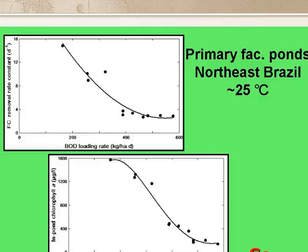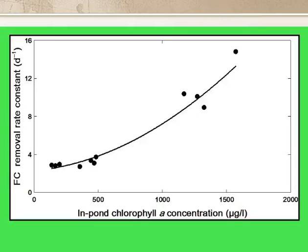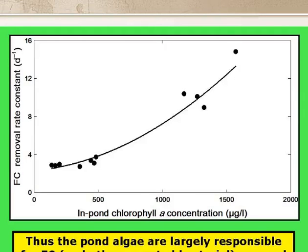Here we have two plots from that facultative pond in northeast Brazil: at the top, the first-order rate constant for faecal coliform removal, Kb in reciprocal days, against BOD loading in kilograms per hectare per day; and at the bottom, the in-pond chlorophyll A concentration in micrograms per litre against loading rate. When we plot the first-order rate constant against in-pond chlorophyll concentration, we get almost a straight line. This tells us for sure that the algae are doing something which kills off the faecal coliforms, and presumably other faecal bacteria as well.